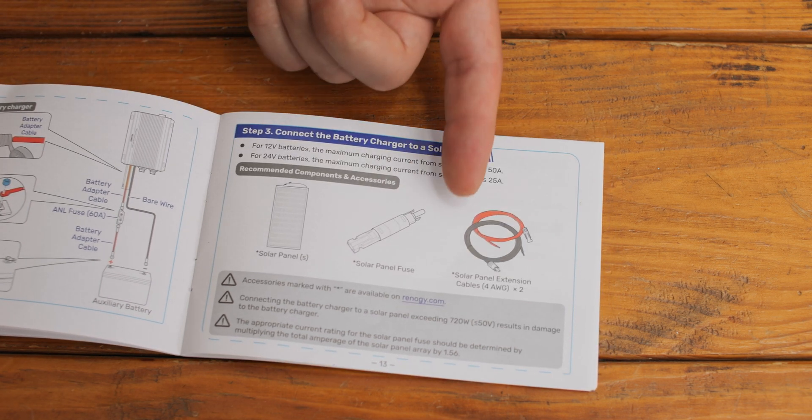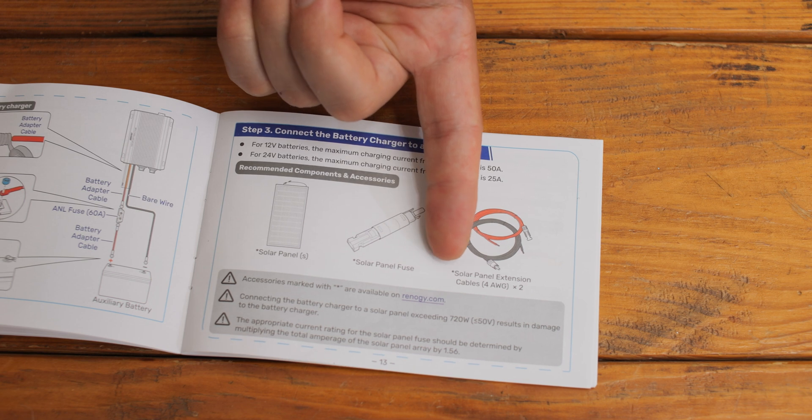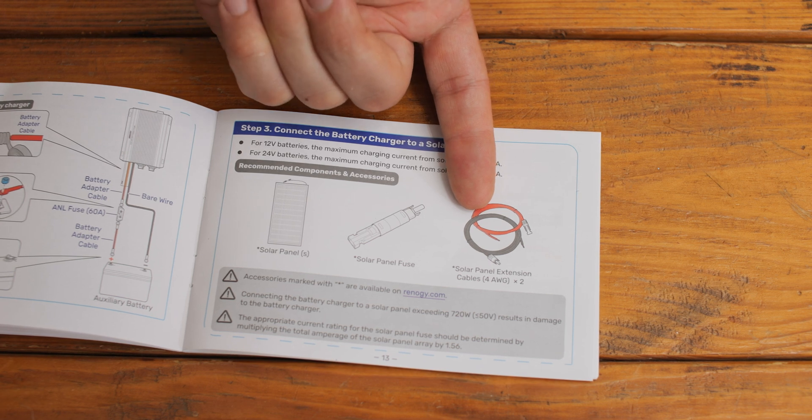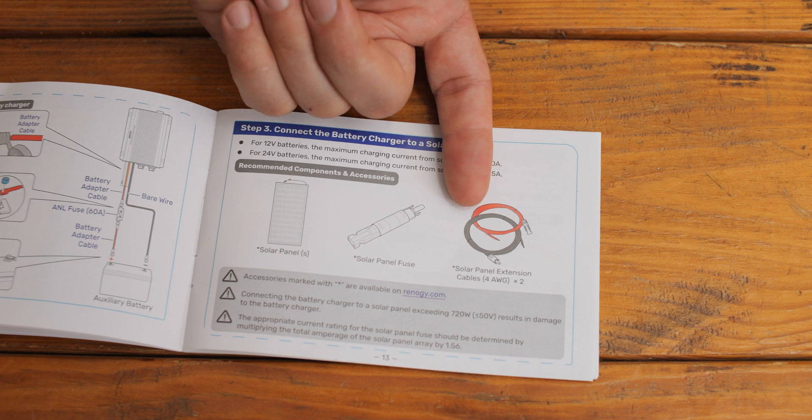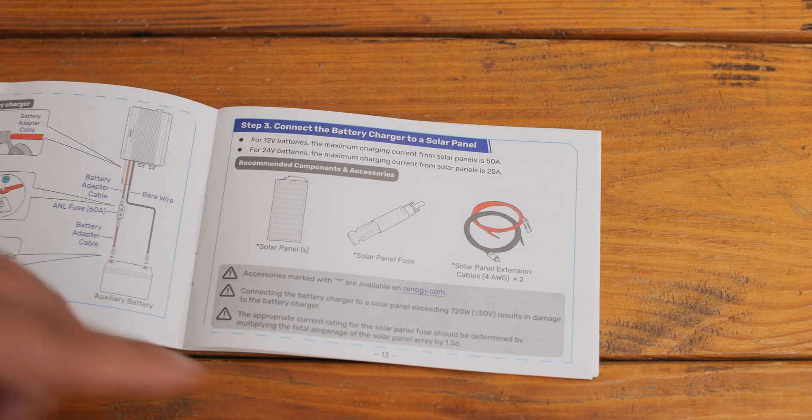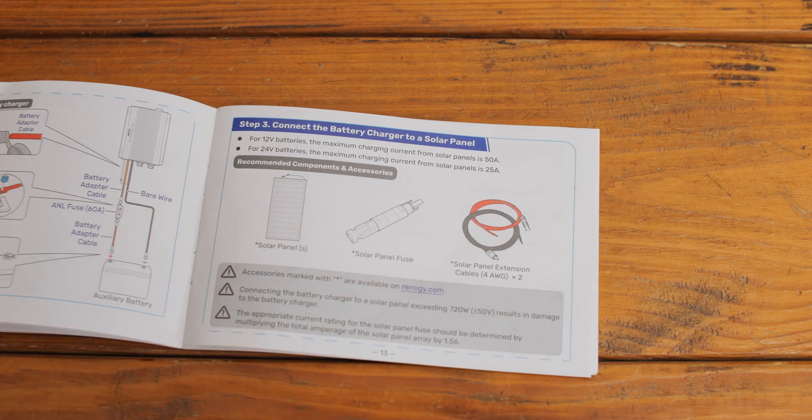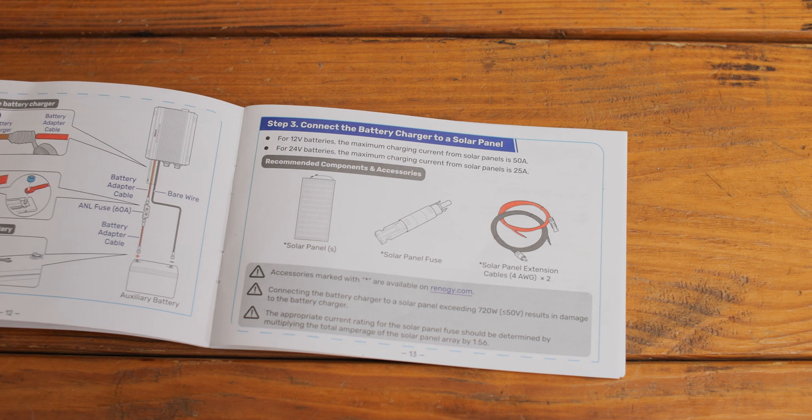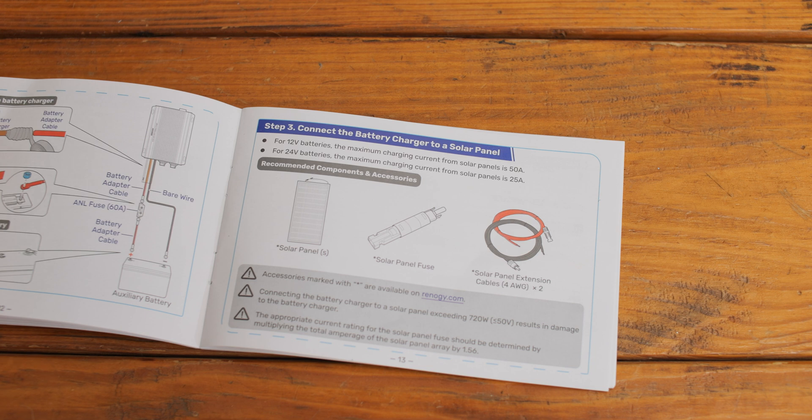Look at this - 4-gauge solar panel extension wire, and this asterisk says it's available on Renogy.com. Well, they don't have 4-gauge extensions, which would be pretty big. What they have is 10-gauge, and everybody seems to sell 10-gauge. I looked all over, couldn't find 4-gauge. That may just be a typo, but I got the 10-gauge ones. I'm going to stick to what they say and bought everything they tell me to buy here.